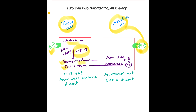Androstenedione and testosterone then move to granulosa cells, where they are converted to E1 (estrone) and E2 (estradiol) respectively via the aromatase enzyme. CYP17 enzyme is exclusively present in theca cells, and aromatase enzyme is exclusively present in granulosa cells — though aromatase is also present in adipose tissue.